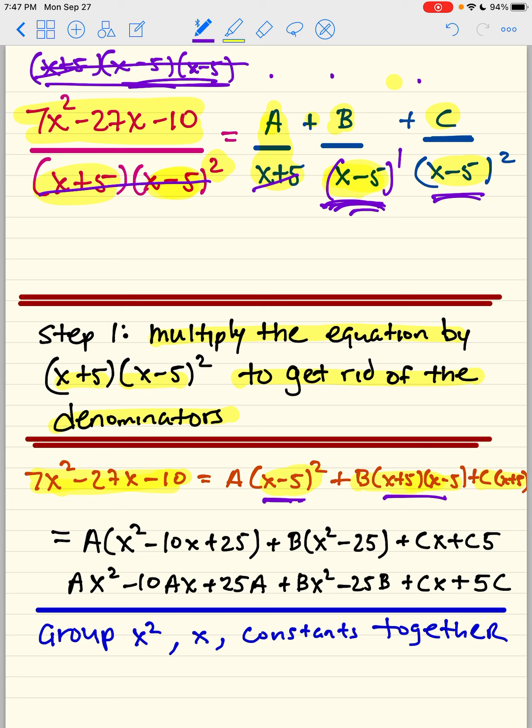All right, so I'm not going to keep rewriting this until the very end because I don't have any room here. So what I'm going to do now is I'm going to distribute x minus 5 squared is x squared minus 10x plus 25.